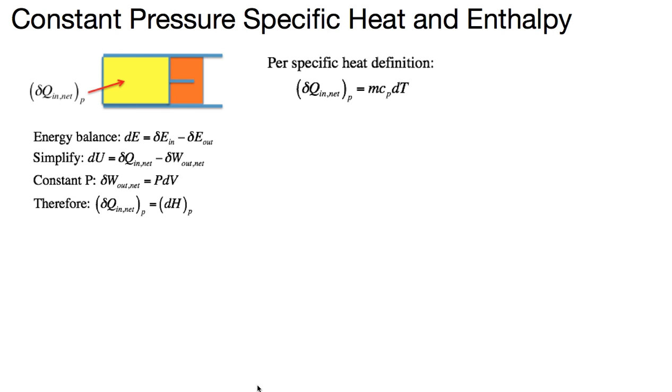Here I have typed the energy balance equation. The infinitesimally small change in the energy of the system, dE, equals the amount of energy coming into the system minus the amount of energy going out. After simplifying, we realize that the only form of energy that goes into the system is in the form of heat, and the net energy out is only in the form of moving boundary work.